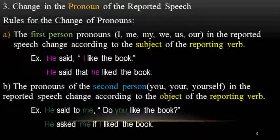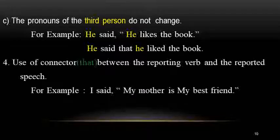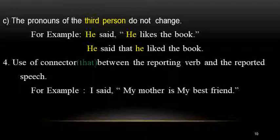The pronouns of the second person — you, your, yourself — in the reported speech change according to the object of the reporting verb. For example, he said to me, 'Do you like the book?' In reported speech: he asked me if I liked the book. Here 'you' is changed to 'I'. These are the changes that we need to observe carefully when changing direct into indirect speech.